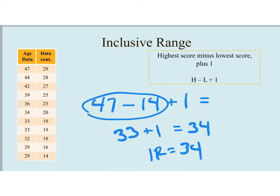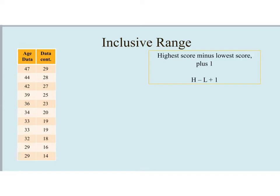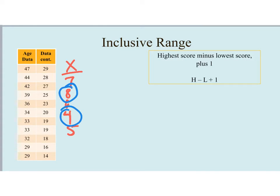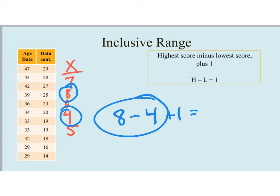The reason 1 gets added back in: the exclusive range focuses on the distance between two scores, whereas the inclusive range focuses on how many numbers are in the span, including the lowest number. Using the smaller data set x with highest 8 and lowest 4: 8 minus 4 equals 4, then add 1, giving an inclusive range of 5. The inclusive range counts all integers from the lowest to the highest value.